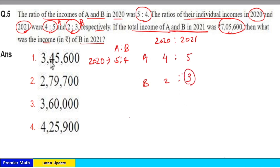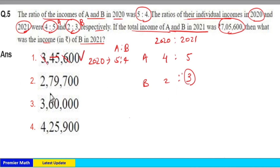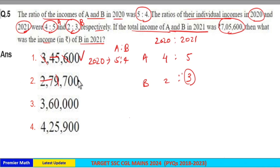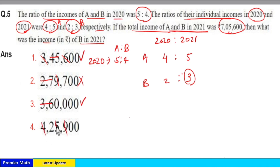For option checking: 5+4=9, cancel; 6+3=9, cancel — 9 is the digital sum, which is a multiple of 3, so it can be our answer. 7+2=9, cancel; 7 is the digital sum, not a multiple of 3. 3+6=9, it can be our answer. 5+4=9, cancel; 9 cancel; 2 is the digital sum, not a multiple of 3. So either option 1 or option 3 can be our answer.